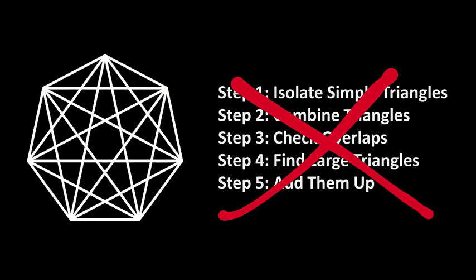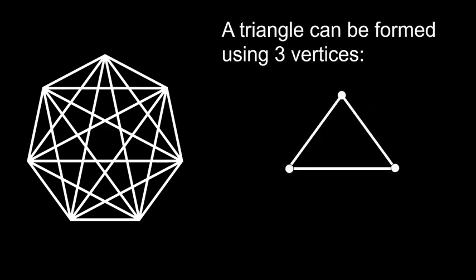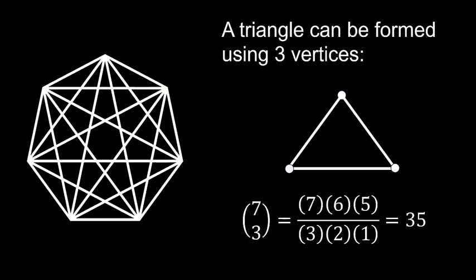Therefore, we're going to introduce a different approach. We observe that triangles are formed by connecting vertices. For any three distinct vertices, there is a unique triangle. Using combinatorial mathematics, we calculate the number of possible triangles by choosing three vertices from seven, which is expressed as 7 choose 3. This calculation yields a total of 35 distinct triangles.